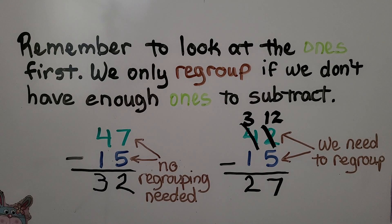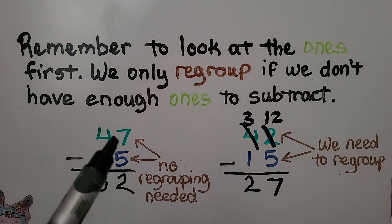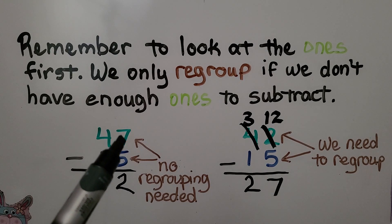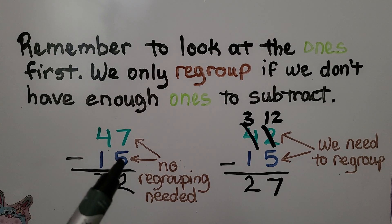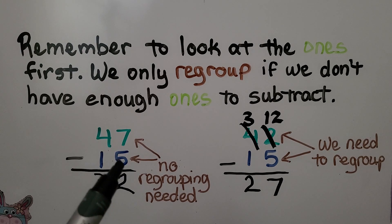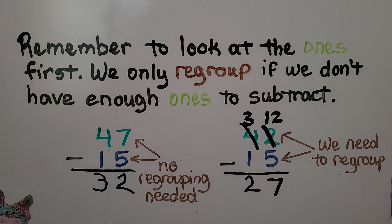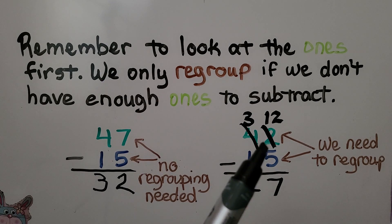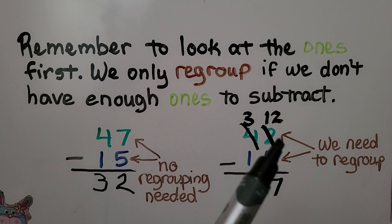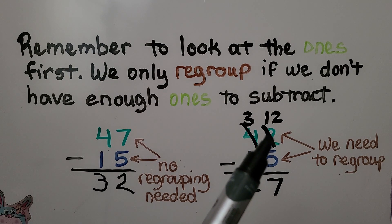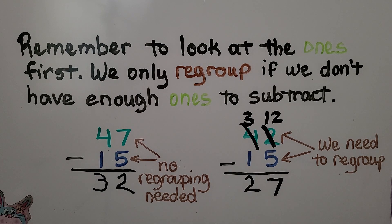Remember to look at the ones first. If the number is great enough to take away the ones place of the subtrahend, then we don't need regrouping. We only need regrouping if the ones are not enough.